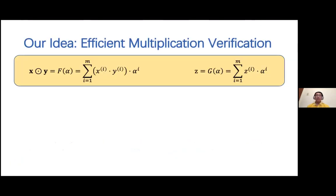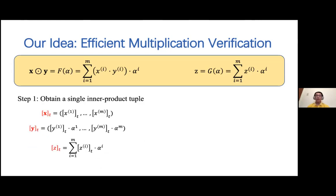To avoid such an attack, consider two polynomials F and G where the coefficients of F are X_i*Y_i and the coefficients of G are Z_i. Verifying the original multiplication tuples is equivalent to verifying whether F equals G, which can be done by testing a random evaluation point alpha. Therefore, we set the first vector X unchanged, multiply the i-th entry of Y by alpha^i, and set Z as the summation of Z_i times alpha^i. We can verify that the inner product between the first two vectors is F(alpha) and Z equals G(alpha). In this way, it is sufficient to verify only the single inner product tuple.